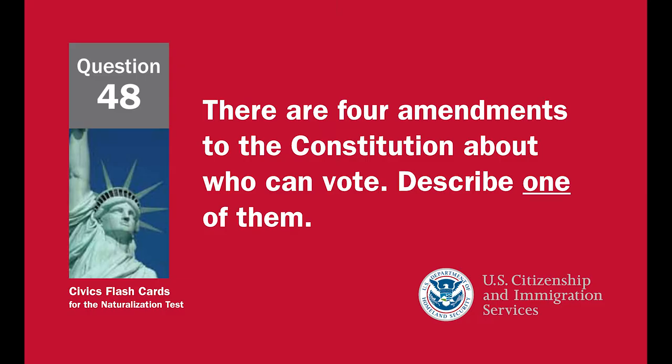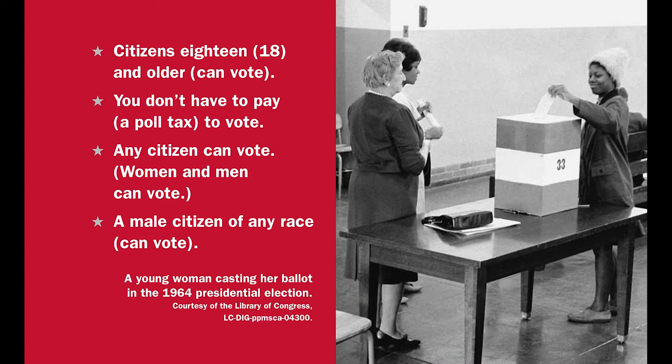There are four amendments to the Constitution about who can vote. Describe one of them. Citizens 18 and older can vote. You don't have to pay a poll tax to vote. Any citizen can vote — women and men can vote. A male citizen of any race can vote.